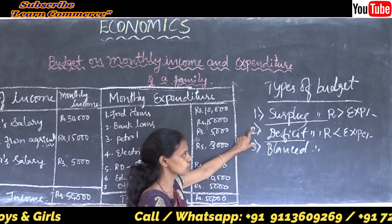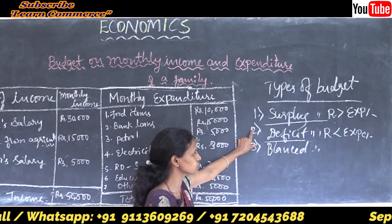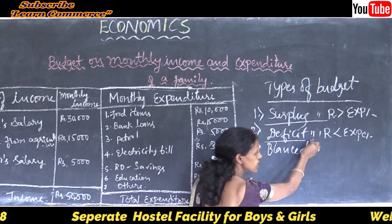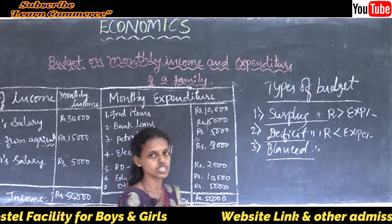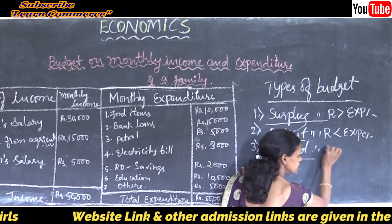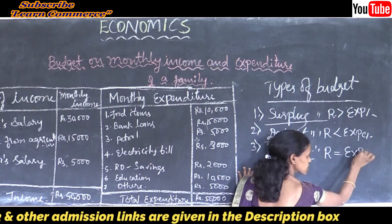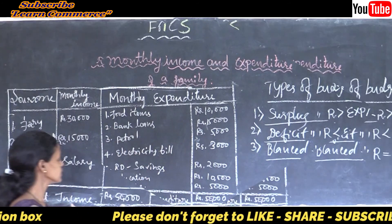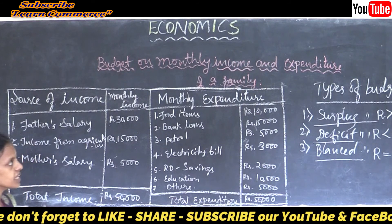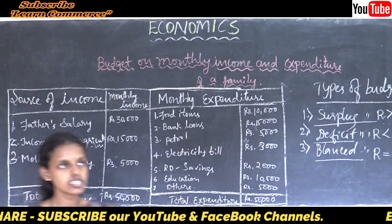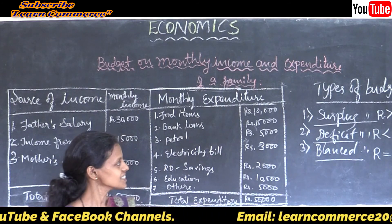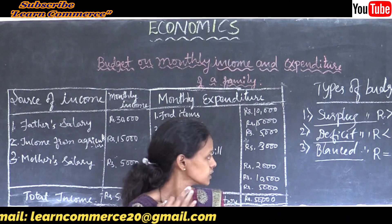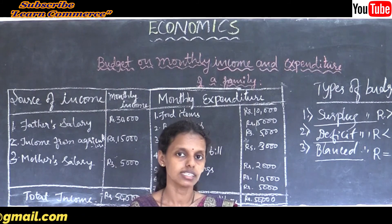The Indian economy is always facing the problem of deficit budget, so it borrows money from other countries or institutions like NABARD or IMF. Third one is balanced budget — when the revenue is equal to the expenditure of the country it is called a balanced budget. So the three types are surplus, deficit, and balanced budget. I will explain these again in the next class. Thank you.